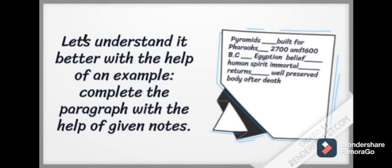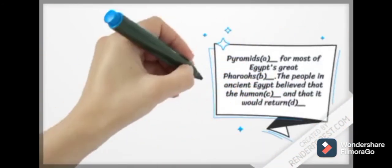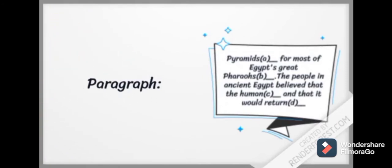Now let us look at the paragraph. The paragraph reads: pyramids dash for most of Egypt's great pharaohs dash, the people in ancient Egypt believed that the human dash, and that it would return to dash. Now you have to fill up A, B, C, D with the help of the notes that were given in the box.